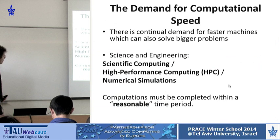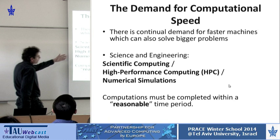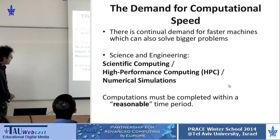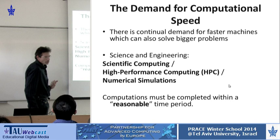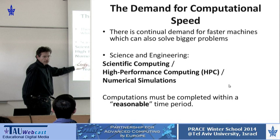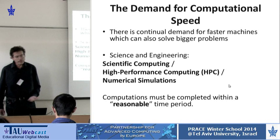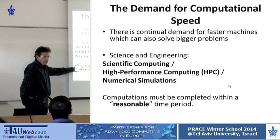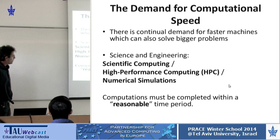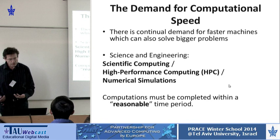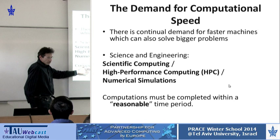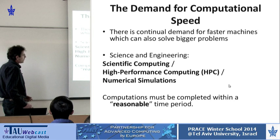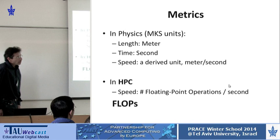The second motivation is speed. In weather forecasting, for example, we need to get results in a reasonable time — if we want to warn people from a storm, we want the answer before the storm hits the shore. Reasonable time is specific to the problem; for weather forecasting it should be a few days before the event. In other cases it is a different time scale.